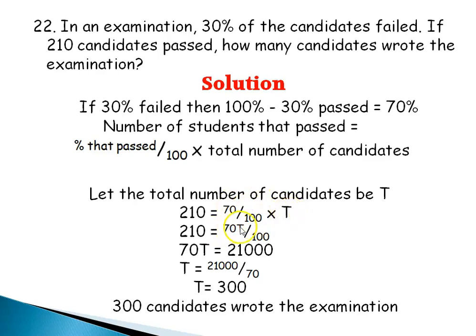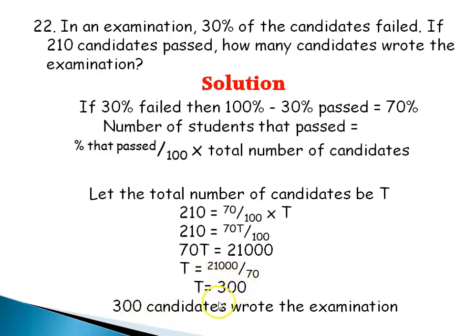So 70C divided by 100 equals 210. Multiplying both sides, 70C equals 210 times 100, which gives 21,000. Dividing both sides by 70, C equals 21,000 divided by 70, which is 300. So 300 candidates wrote the examination.